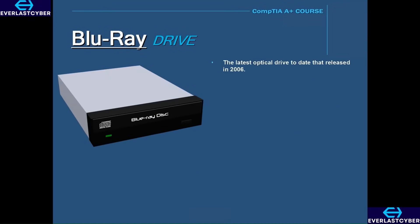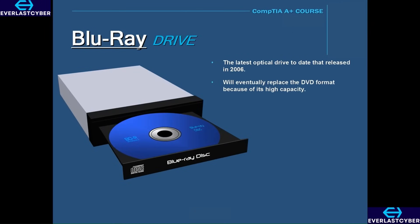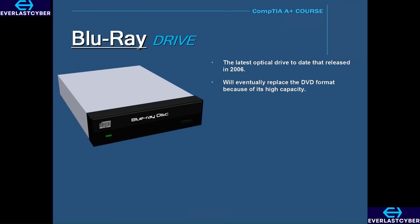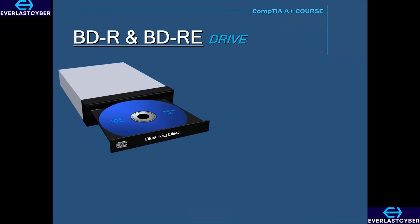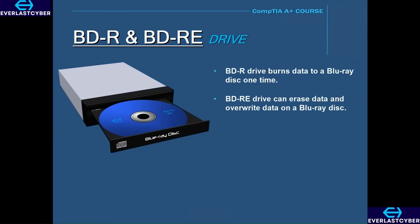Blu-ray is an optical drive that was released in 2006. Blu-ray replaced the DVD format because of its high capacity. Blu-ray uses a shorter wavelength laser compared to DVD, which allows a Blu-ray disc to store far more data. A standard Blu-ray disc can hold 25 gigabytes of data, which is five times more than a DVD. Blu-ray also has a recordable drive called BDR, or Blu-ray Disc Recordable, where you can burn data to a Blu-ray disc one time. You can also erase and overwrite data on a Blu-ray disc using a BDRE, or Blu-ray Disc Recordable Erasable drive.